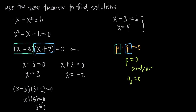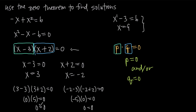The other solution is x equals negative two. Plugging that in, I get negative two minus three times negative two plus two equals zero. Simplifying: negative two minus three gives me negative five, and negative two plus two gives me zero. Negative five times zero is zero, so I get zero equals zero, and that checks out also.